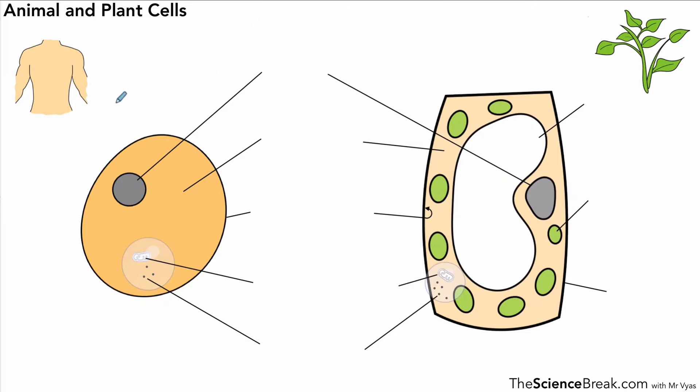Here is our animal cell on the left and this is our typical plant cell on the right. The first labels are fairly straightforward, and these are five parts found in both plant and animal cells. The first one is the nucleus.